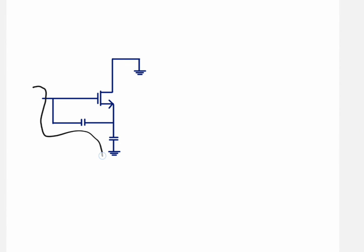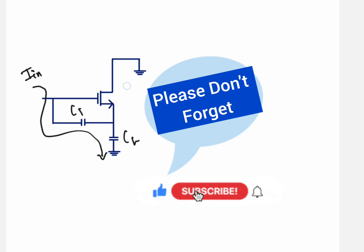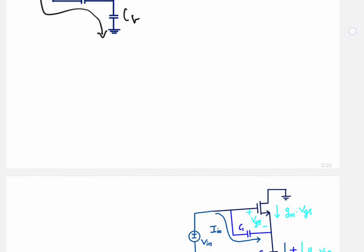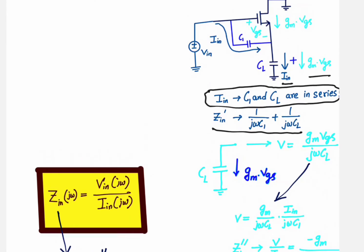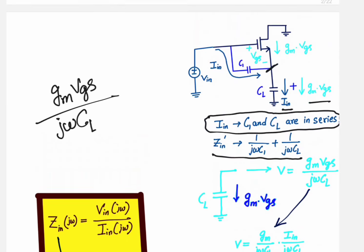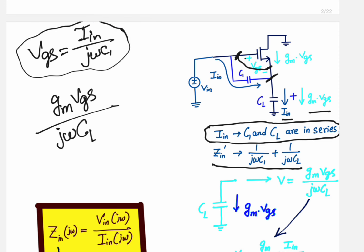If only i_in is flowing, C1 and CL are in series — I am not considering gm·vgs here. Now, vgs is the voltage from this point to this point, and since only i_in flows through C1, vgs equals i_in divided by jωC1.